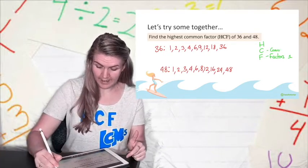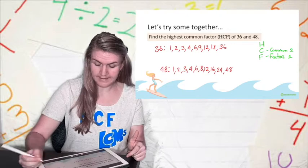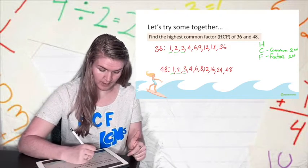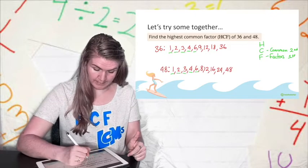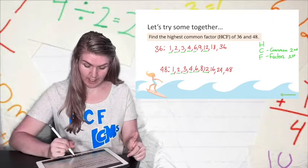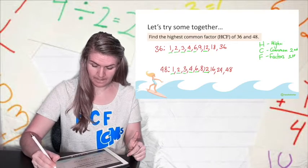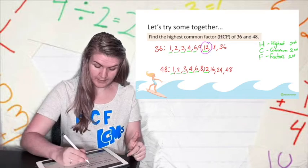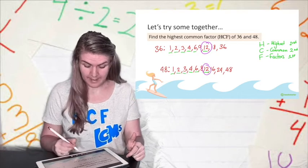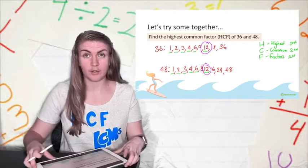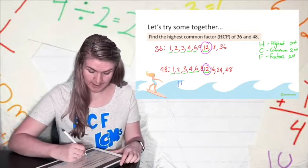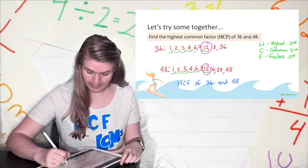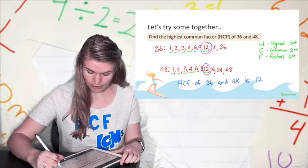Step 2, what do they have in common? Okay, that's the second thing. Okay, so they've got 1 in common, 2, 3, 4, 6, 12. What is the highest? Alright, that comes third. What's the highest? That's 12. There we go. Now my question is written as a sentence, so I'm going to write my answer as a sentence. The highest common factor of 36 and 48 is 12.